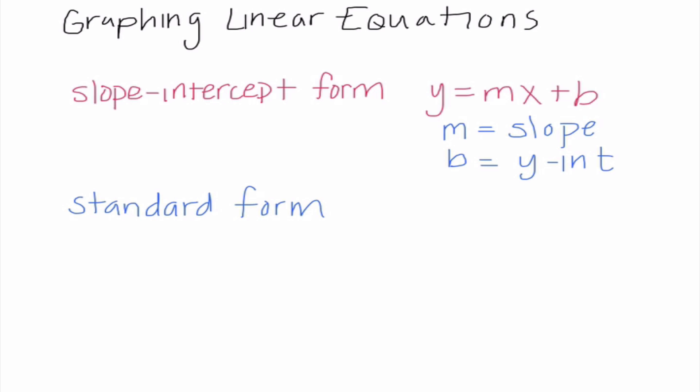Our second form, some of you guys may have learned and some of you did not, but this is called standard form. That's when we have x and y on the same side, and then it's equal to what we call c, which represents a constant. In order to find our slope in standard form, we are going to go ahead and do the opposite of a over b.